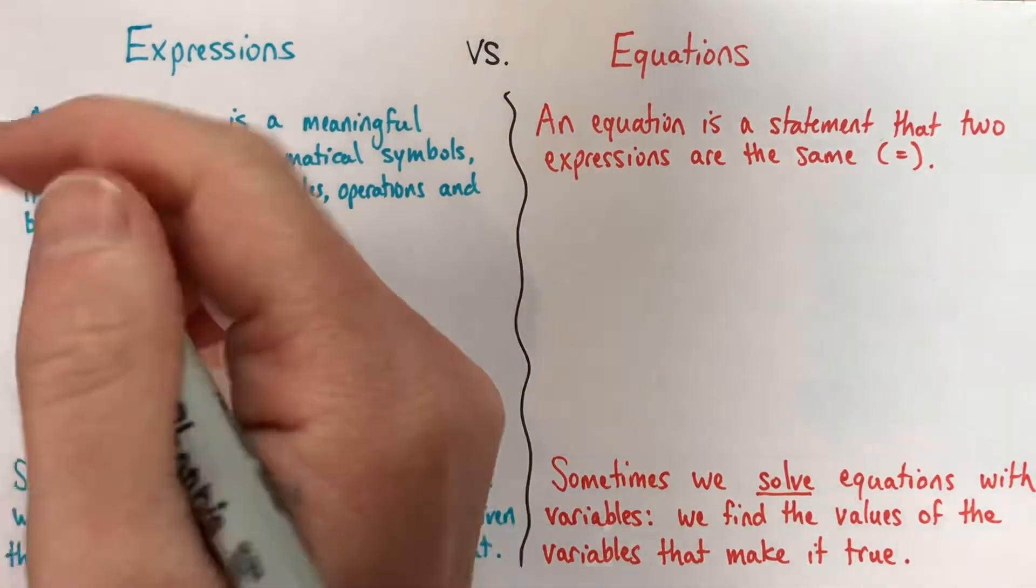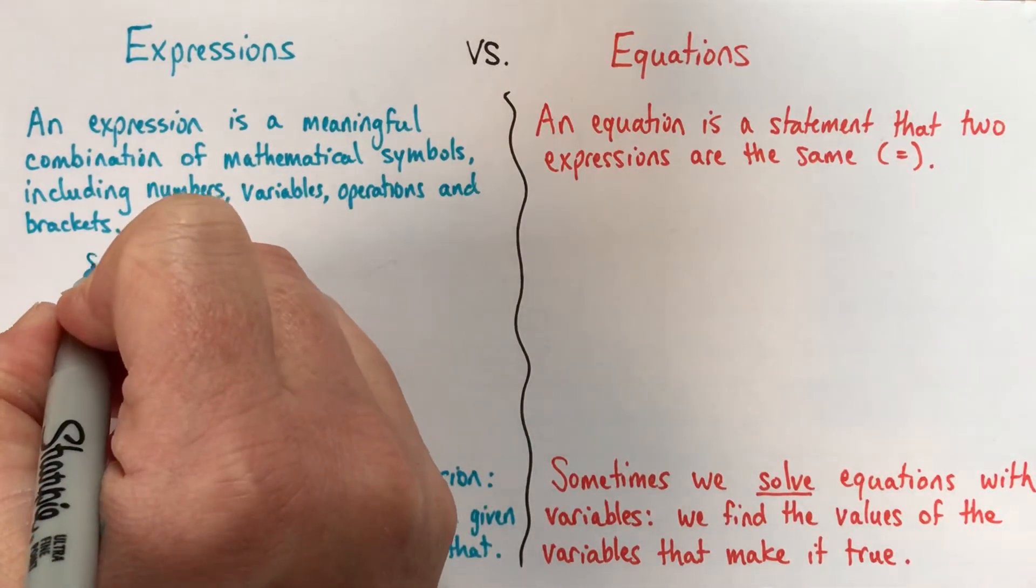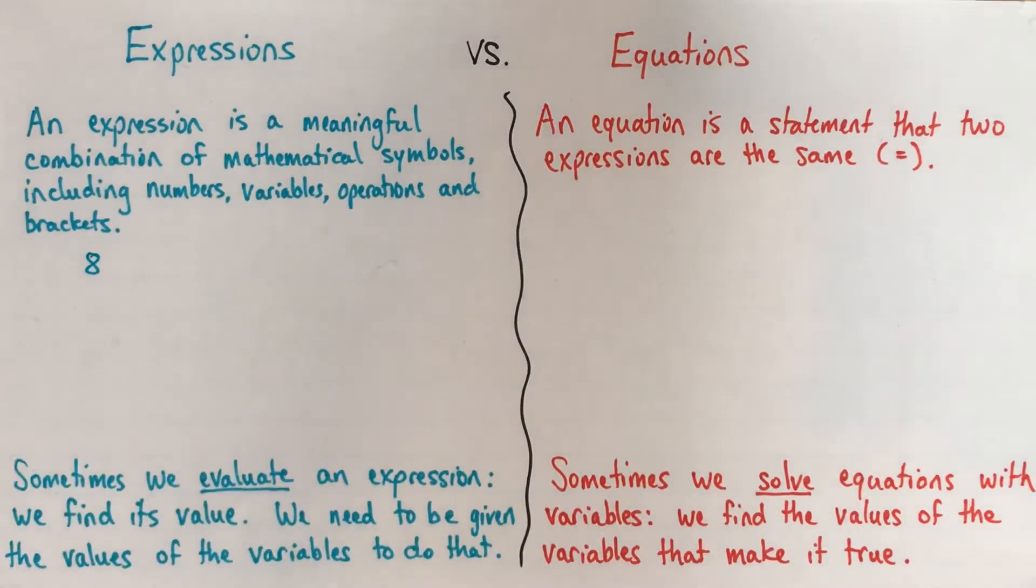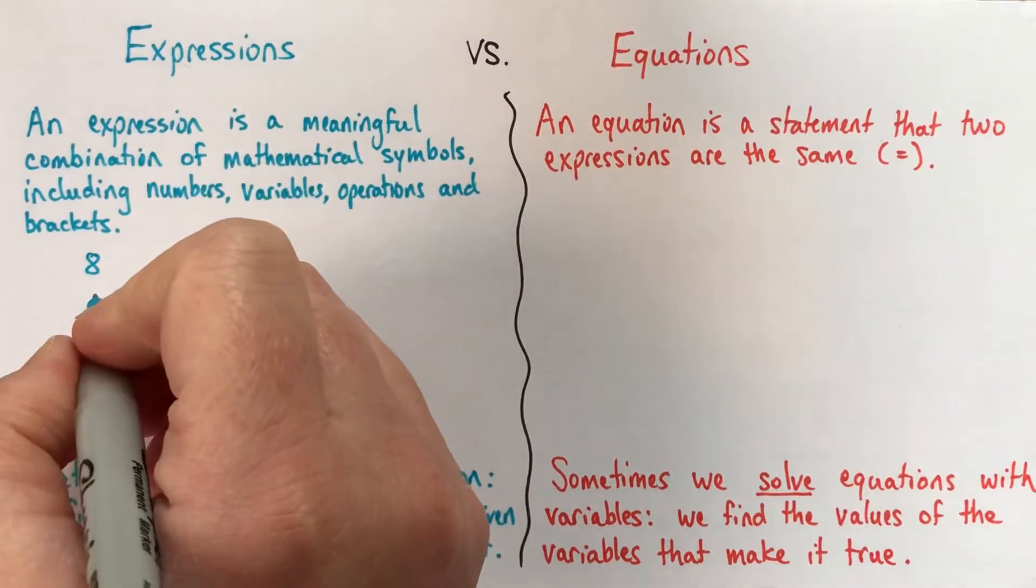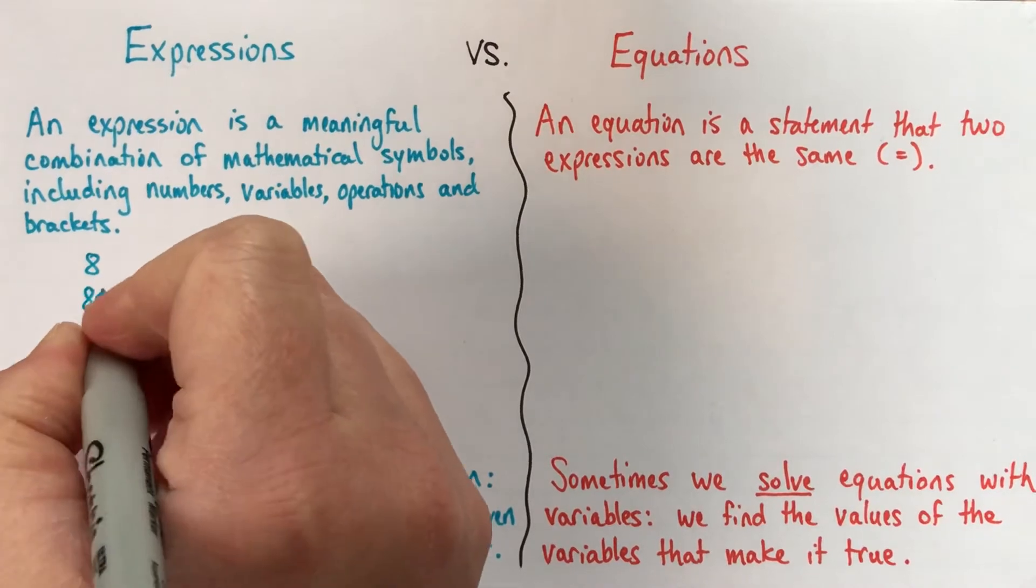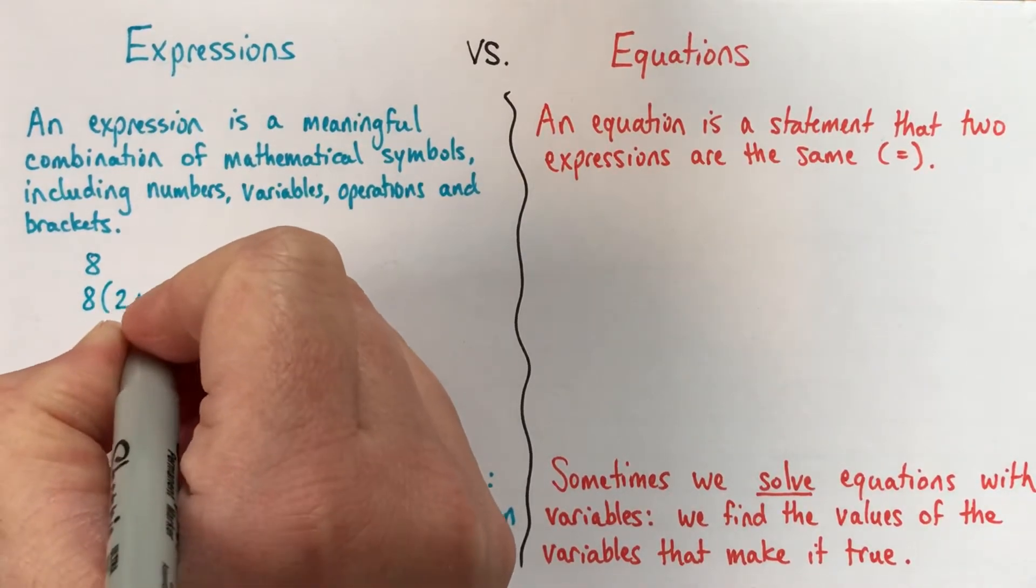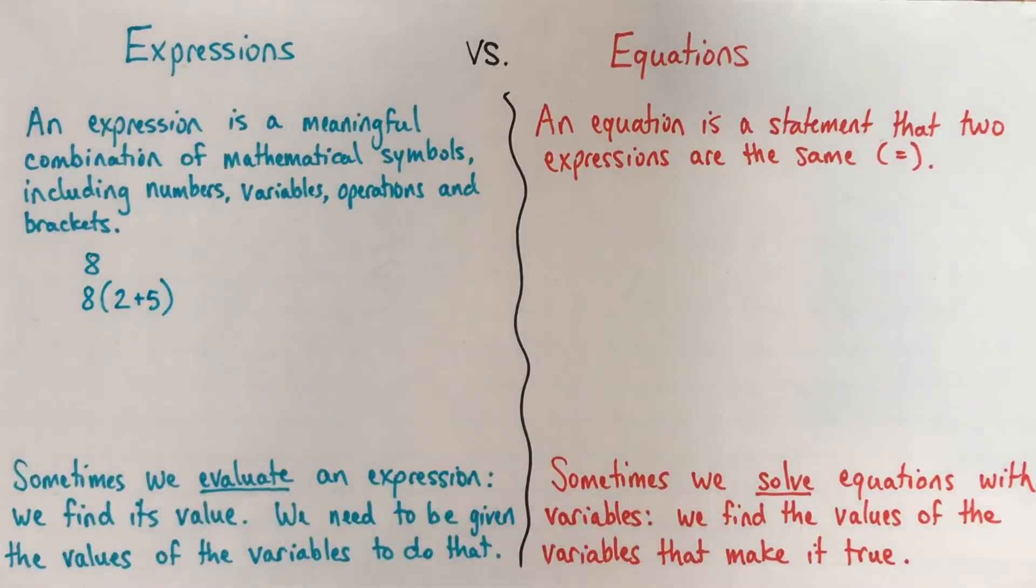So let's start, here's a really simple expression right here. So just a simple number, a single number is a perfectly valid expression. You could have an expression that might be like something like 8 times 2 plus 5, alright, so these don't have any variables but they're definitely expressions.